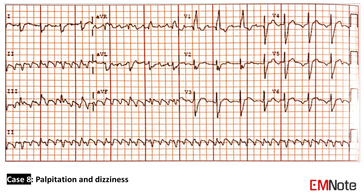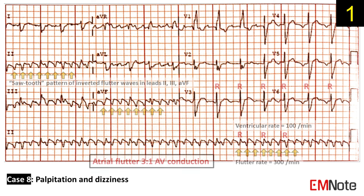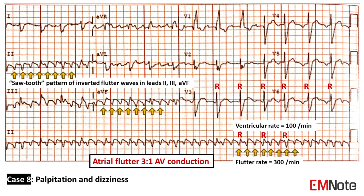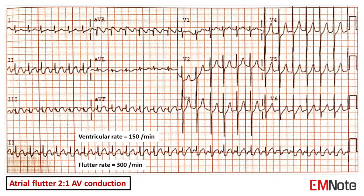Case 8: The patient presents with palpitation and dizziness. The ECG shows atrial flutter with 3 to 1 AV conduction. Atrial flutter is characterized by a sawtooth pattern of inverted flutter waves in leads 2, 3, and AVF. The flutter rate is about 300 per minute. This ECG also demonstrates atrial flutter with 2 to 1 AV conduction, with a ventricular rate of 150 per minute.